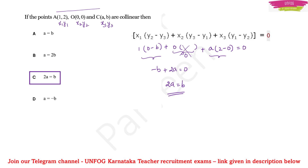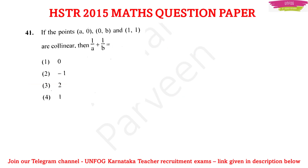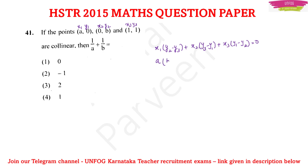A similar question appeared in HSTR 2015 as the first question of the maths paper: if the points A(a, 0), O(0, b), and C(1, 1) are collinear, find 1/a + 1/b, with four options given. Directly apply the collinearity equation: x1(y2 − y3) + x2(y3 − y1) + x3(y1 − y2) = 0. Assign x1 y1 = (a, 0), x2 y2 = (0, b), x3 y3 = (1, 1).